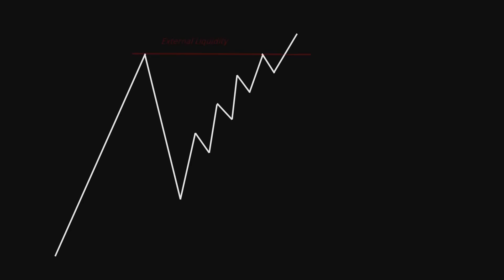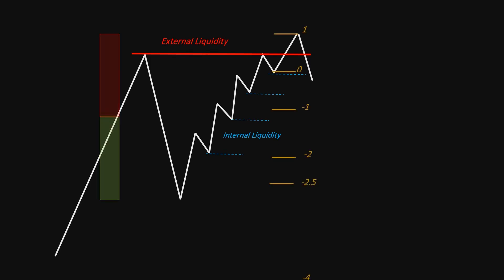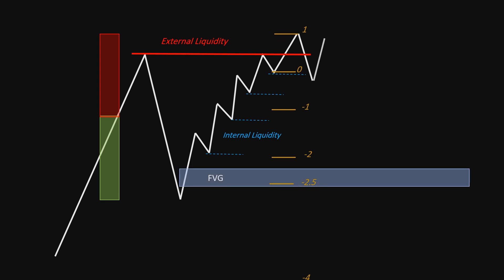By now you should understand the concepts of external and internal liquidity. Price primarily does two things: it moves toward external liquidity, which consists of swing highs and lows. Once price takes out external liquidity, it often draws toward a fair value gap in the discount. If there's no FVG in the discount, it might mitigate and draw toward any other FVG available.